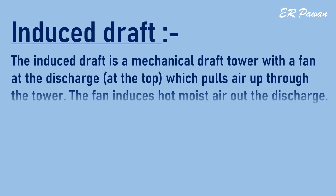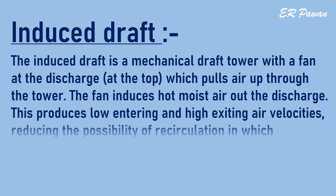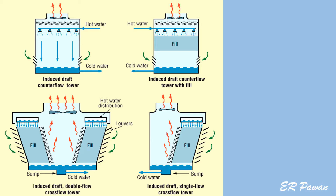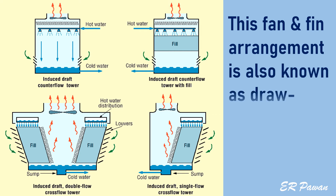Mechanical draft cooling towers consist of two types. Induced draft: the induced draft is a mechanical draft tower with a fan at the discharge at the top, which pulls air up through the tower. The fan induces hot moist air out the discharge. This produces low entering and high exiting air velocities, reducing the possibility of recirculation — in which discharged air flows back into the air intake. This fan and fin arrangement is also known as draw-through.